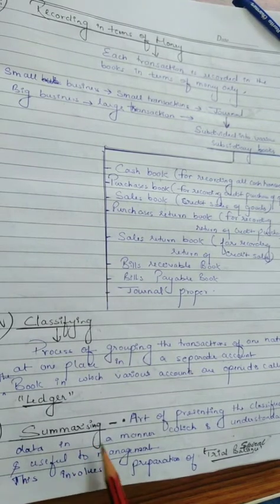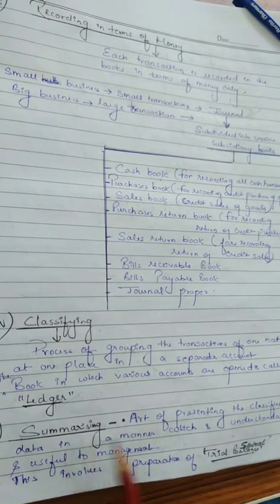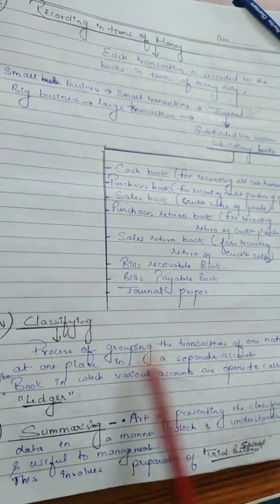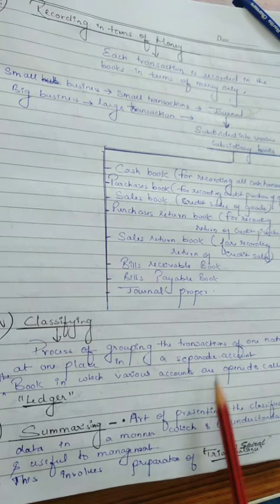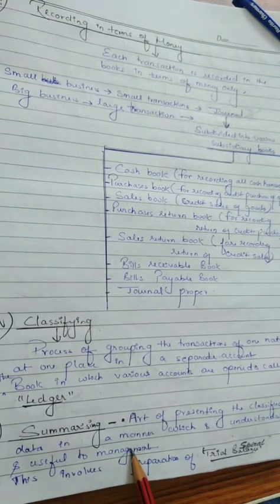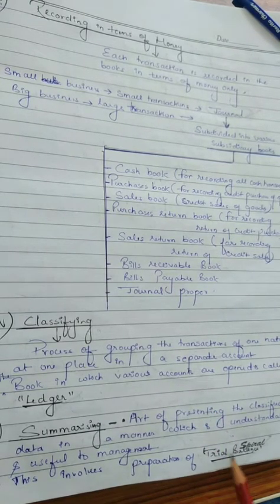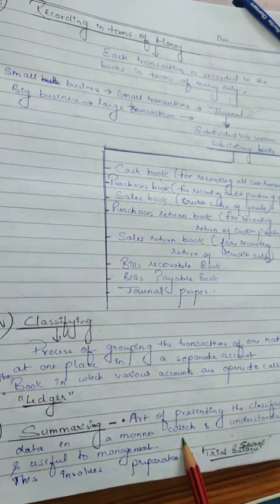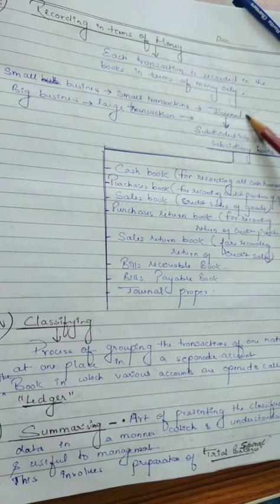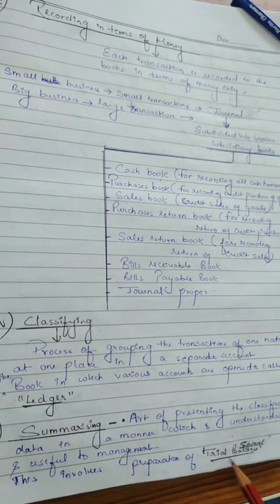The next characteristic is summarizing. Summary is the short description of main ideas. Summarizing here means presenting the classified data in a manner which is understandable and useful to the management, its users, and its owners. Summarizing also involves preparation of trial balance. So transactions are first recorded in the journal, then classified in the ledger, and at last they are summarized by preparing the trial balance.